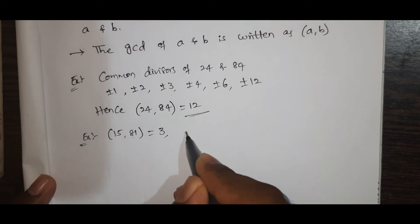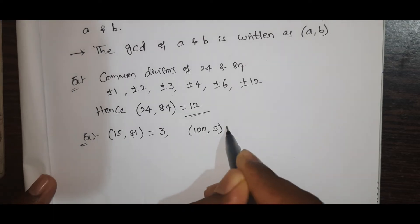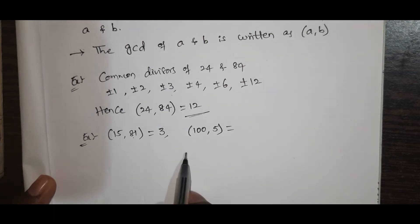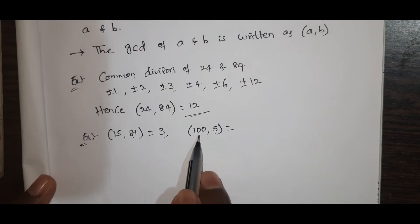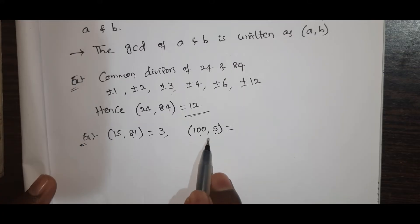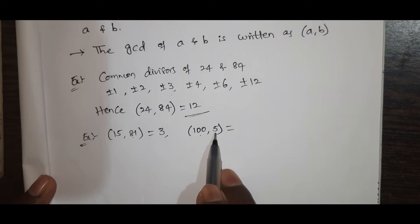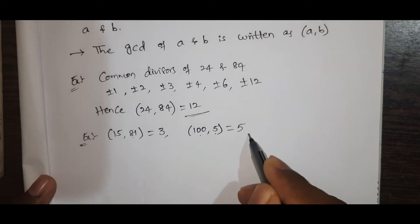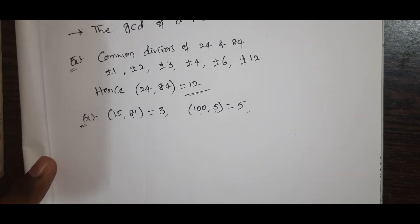Next example: let's take 100 and 5. Here we have 5 numbers. We have 1 divisible and 5 divisible. The GCD is 5. We will use 5 as the greatest common divisor.